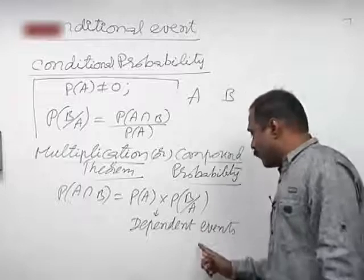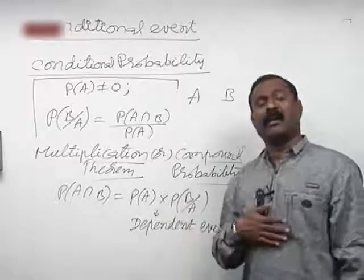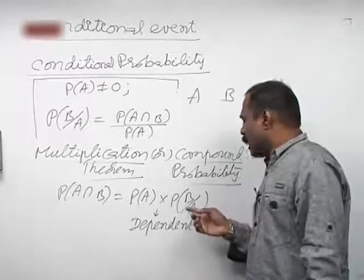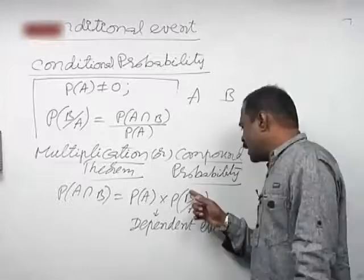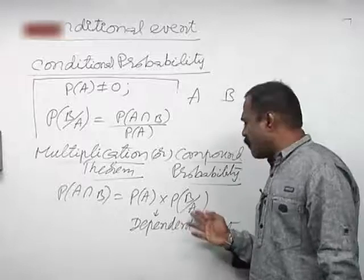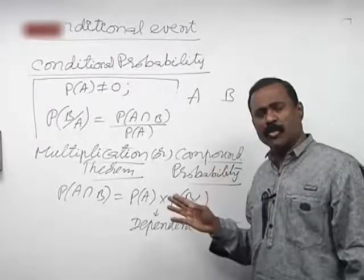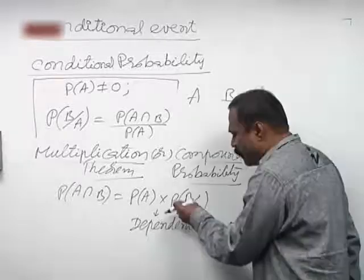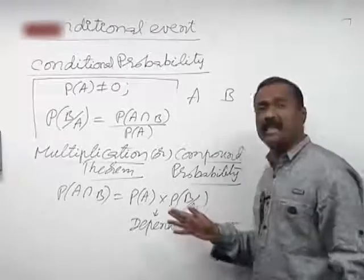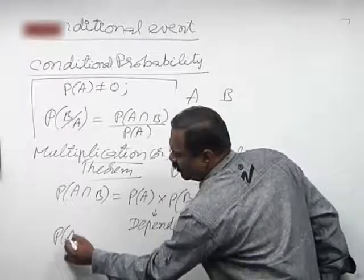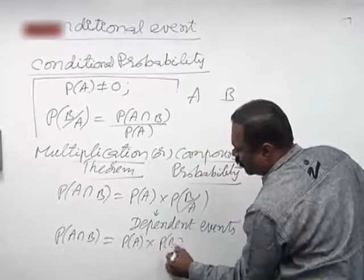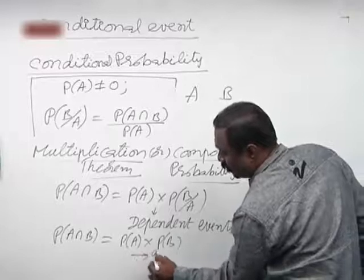This formula is used when you have dependent events. When events are independent, B does not depend on A — irrespective of the occurrence of A, B occurs. So P of B given A simply becomes P of B, meaning P of A intersection B equals P of A into P of B for independent events.